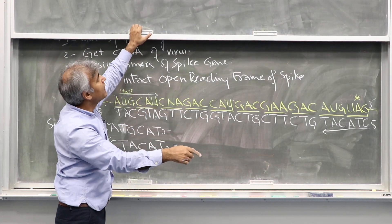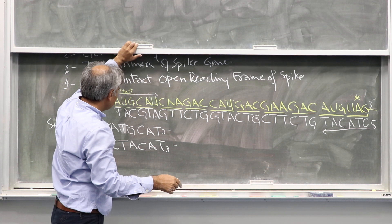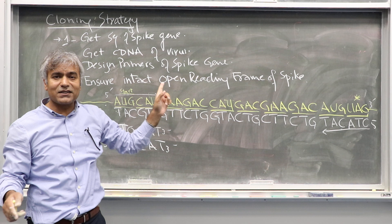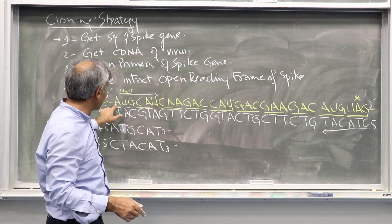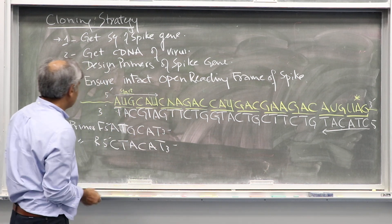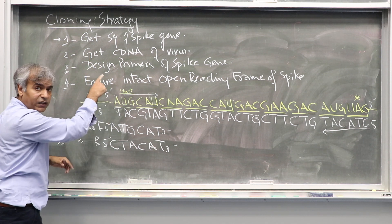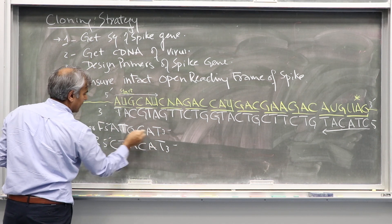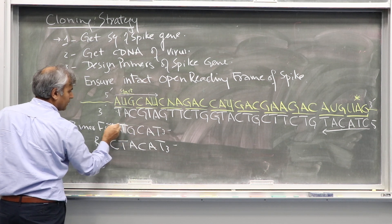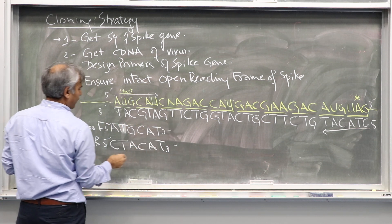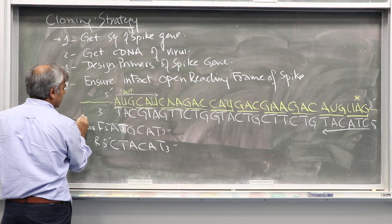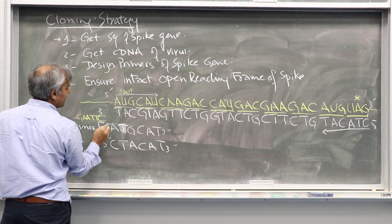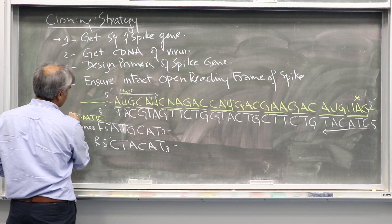How do we do this? EcoRI and XbaI are in the vectors; they are not present here. So what we do, since we integrated them in our cloning strategy, we will say this is the PCR primer - the forward primer for the spike gene. We will add G-A-A-T-T-C in the beginning.